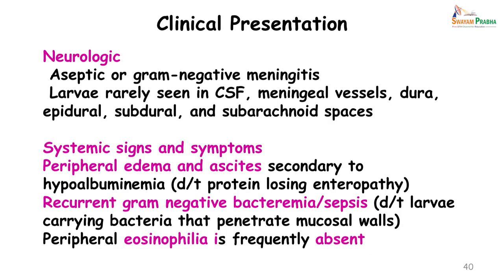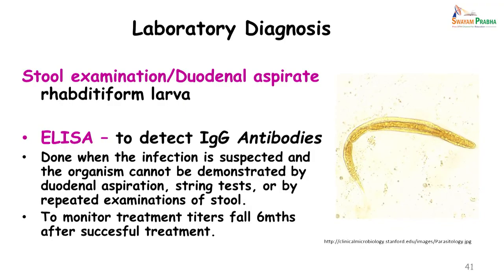To summarize the clinical forms: you can have an acute infection, a chronic or persistent infection, or hyperinfection/disseminated strongyloidosis due to reduced immunity from immunosuppression.